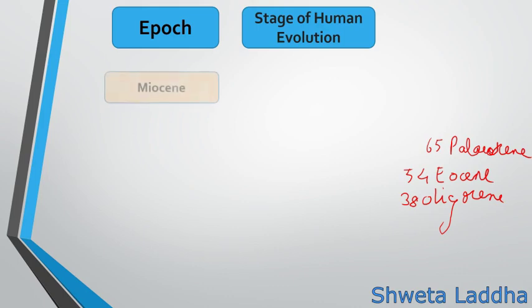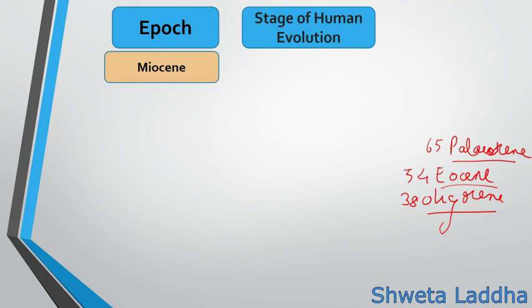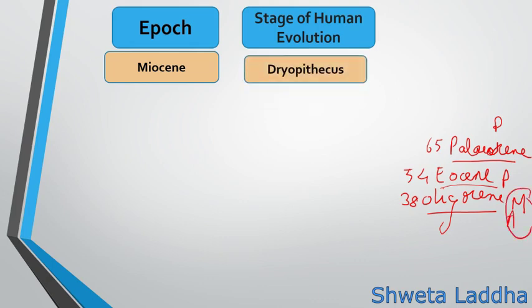After Oligocene came the Miocene epoch. During the Miocene epoch, 20 to 25 million years ago, Dryopithecus fossils were found. Then came the Pliocene, around 6 to 7 million years ago. During the late Miocene and early Pliocene, Ramapithecus fossils were found.